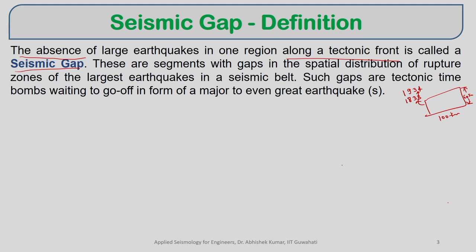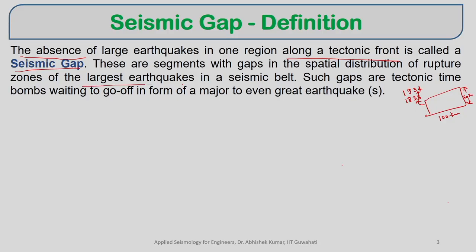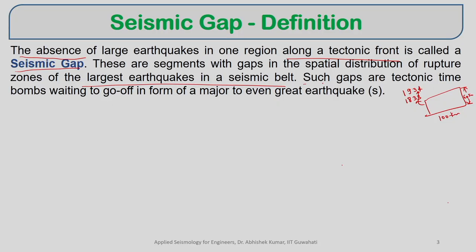Rupture means the area that has undergone failure in terms of heat, melting, or breakage. These are potentially the zones of largest earthquakes in a seismic belt. Such gaps are tectonically time bombs—energy accumulation is going on and it may trigger some day. We still do not have complete information to say whether it is going to trigger in the next 5 or 10 years, but because strain energy is accumulating and adjoining sections of the same fault are showing signs of rupture and frequent earthquakes, this particular gap will also eventually show seismic activity.